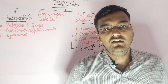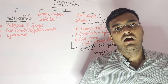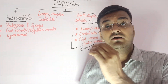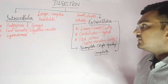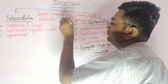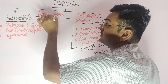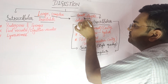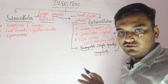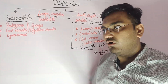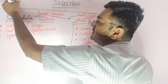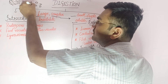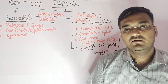Hello friends! Today we will explain about digestion and its types. So first, let's understand what we mean by the term digestion. Digestion is the change of large, complex, and insoluble molecules to small, simple, and soluble molecules. So a very complex insoluble molecule is broken down into small soluble molecules — that would be termed as digestion.